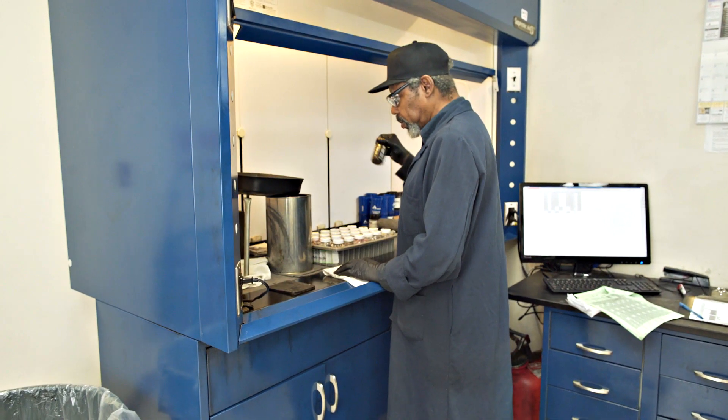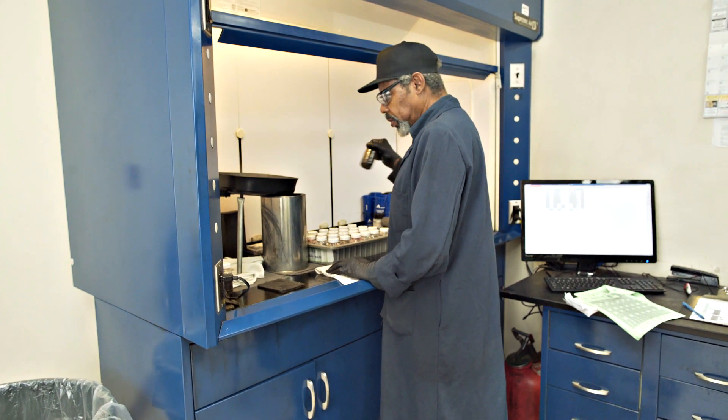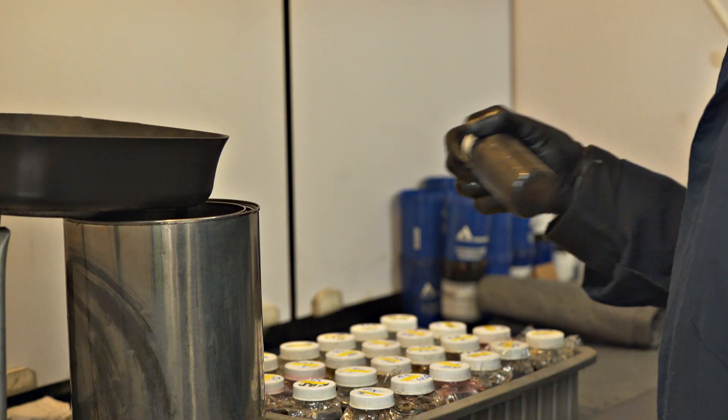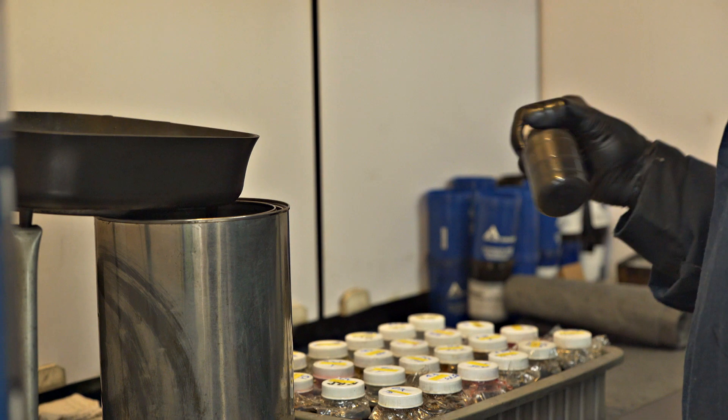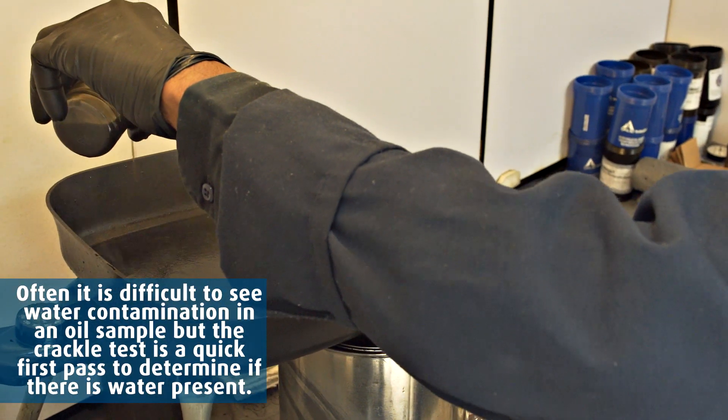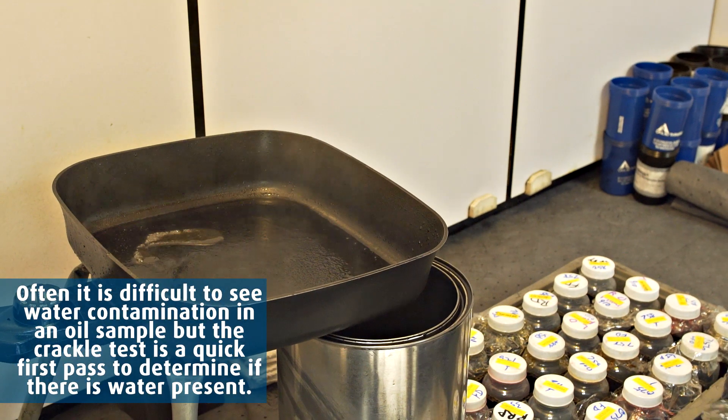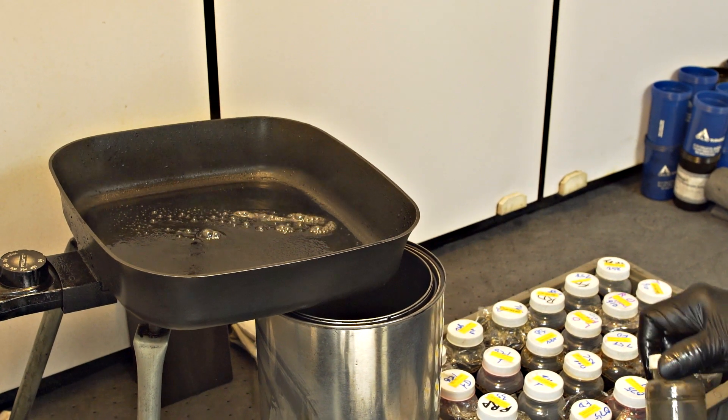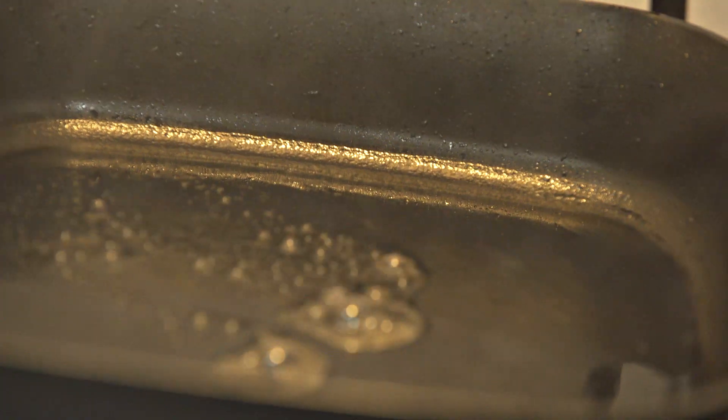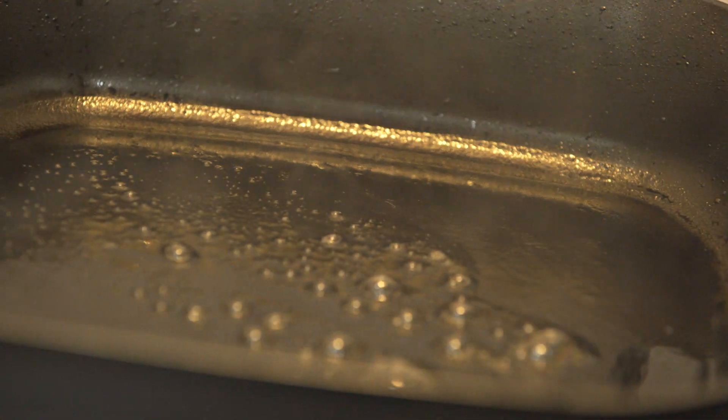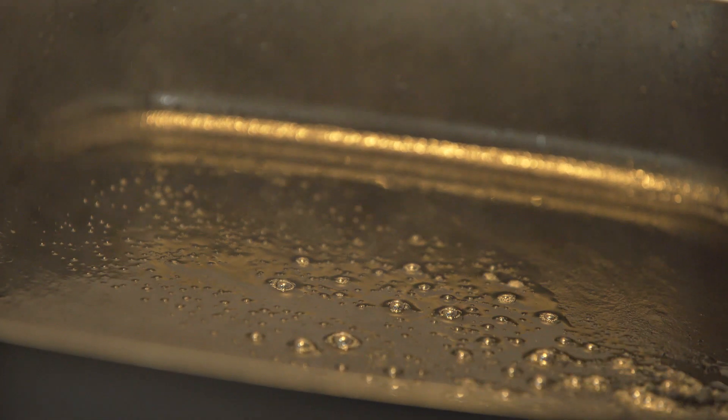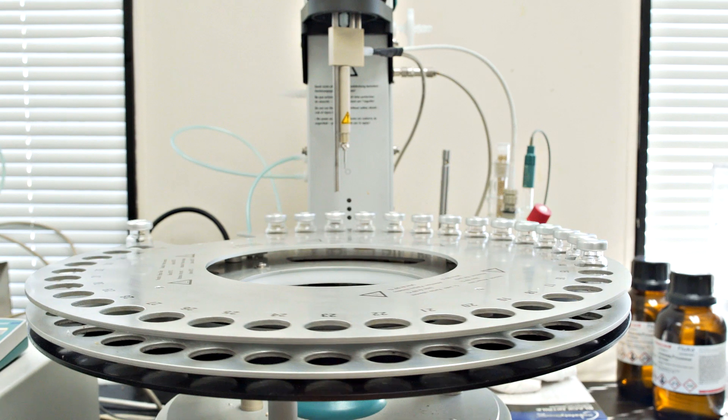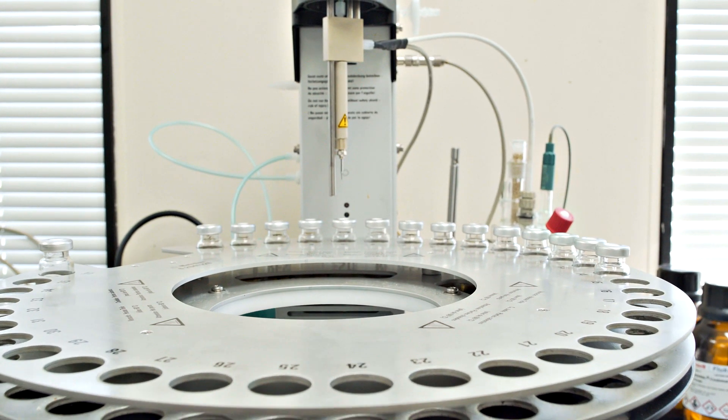Water is a common and dangerous contaminant and is the number one cause of equipment failure. A quick determination for water in an oil sample is the crackle test. A hot plate is heated and the sample is poured onto the surface to screen for excessive water contamination. If the sample crackles or bubbles, then excessive water is present. This is then verified by the Carl Fisher Analyzer to quantify actual water content.